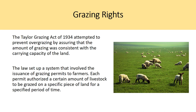There are also grazing rights. The Taylor Grazing Act of 1934 attempted to prevent overgrazing by assuring that the amount of grazing was consistent with the carrying capacity of the land. The law set up a system involving the issuance of grazing permits to farmers — each permit authorized a certain amount of livestock to be grazed on a specific piece of land for a specified period of time. Without such permits, public grazing land becomes an open access resource problem where everyone uses it until the grass dies out — similar to what we discussed in previous chapters.